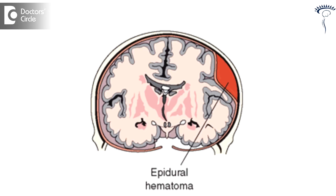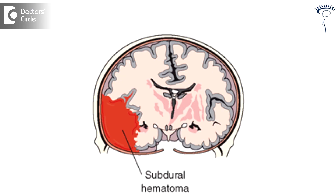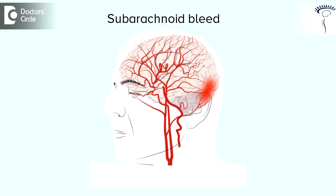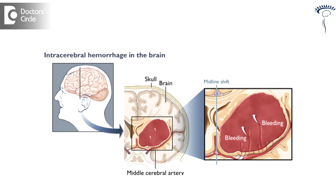Now, coming to the cerebral hematomas and intracranial hematomas — here there are different types. One is epidural hematoma, that is between the skull and the dura; this is also called as extradural hematoma. Number two is the subdural hematoma, that is between the dura and the brain. The third one is subarachnoid bleed, that is below the arachnoid. And the fourth one is intracerebral bleed — that means within the brain parenchyma, the hematoma will be there.